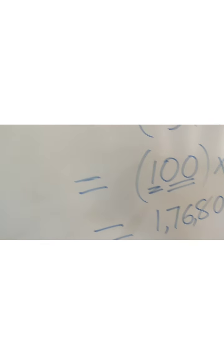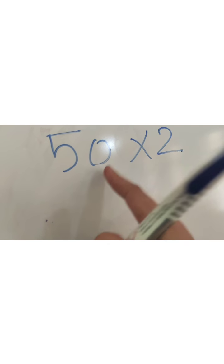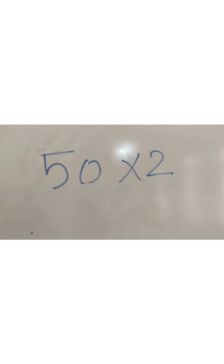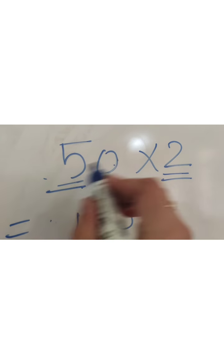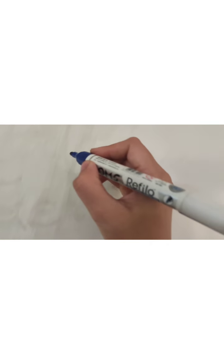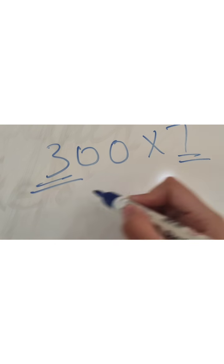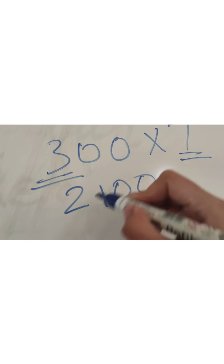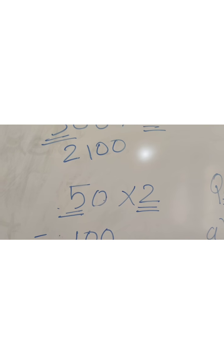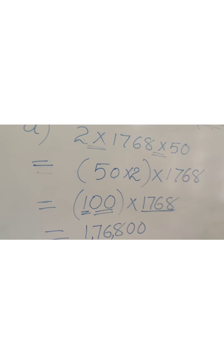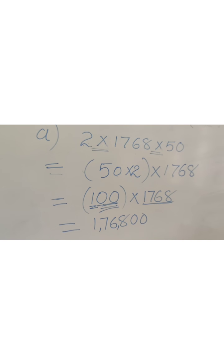Let's see some quick examples. For 50×2: first multiply 5×2 = 10, then add the 1 zero already there, so 50×2 = 100. Similarly, for 300×7: 3×7 = 21, and there are 2 zeros, so 300×7 = 2100. In this way, you can multiply such numbers easily. We multiply numbers in such a way that we get zeros at the ones and tens place.